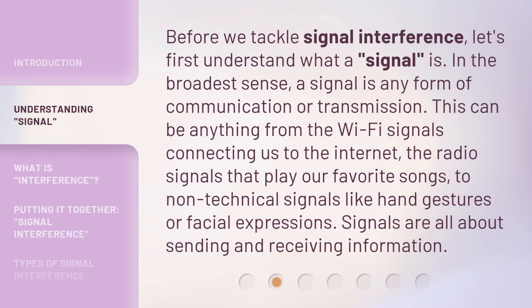Before we tackle signal interference, let's first understand what a signal is. In the broadest sense, a signal is any form of communication or transmission. This can be anything from the Wi-Fi signals connecting us to the Internet, the radio signals that play our favorite songs, to non-technical signals like hand gestures or facial expressions. Signals are all about sending and receiving information.